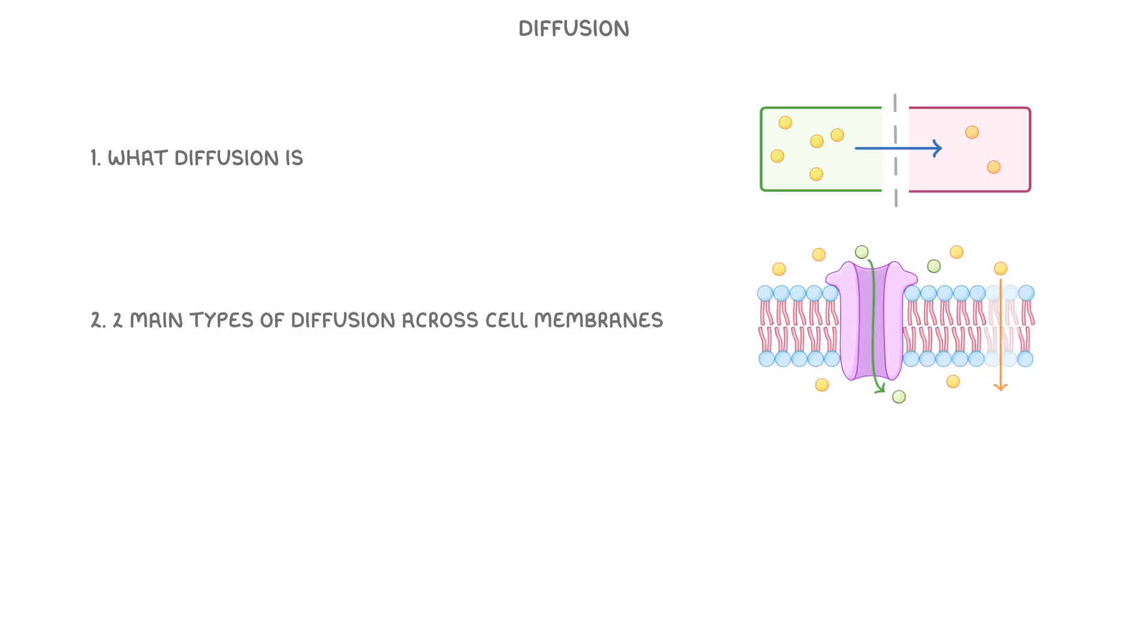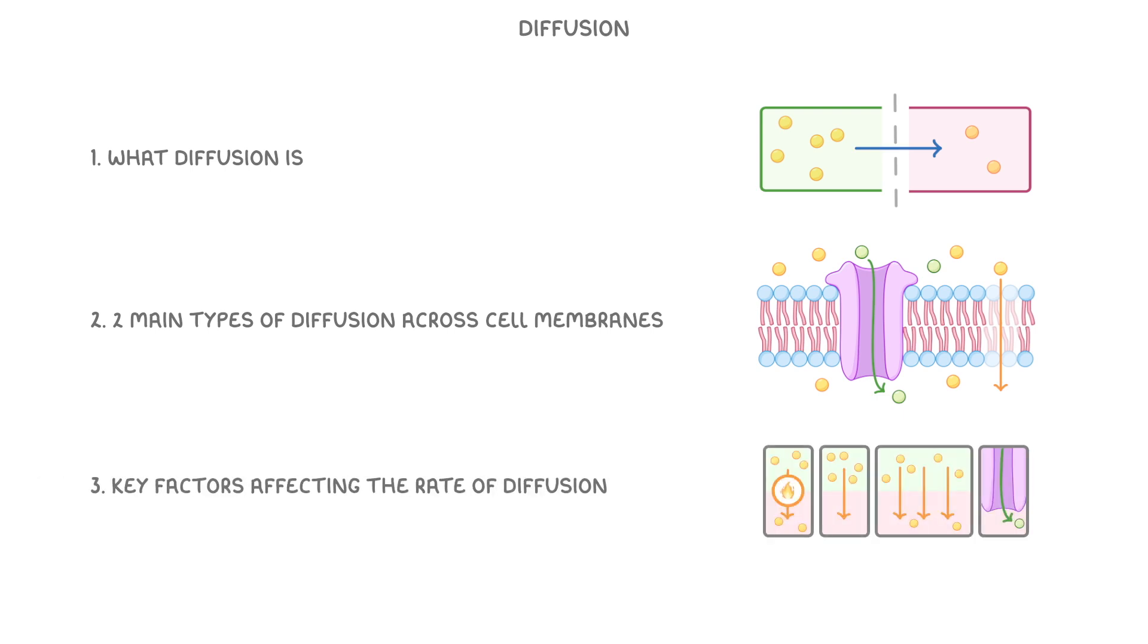In this video we're learning about diffusion, so we'll cover what diffusion is, the two main types of diffusion across cell membranes, and finally, the key factors affecting the rate of diffusion.